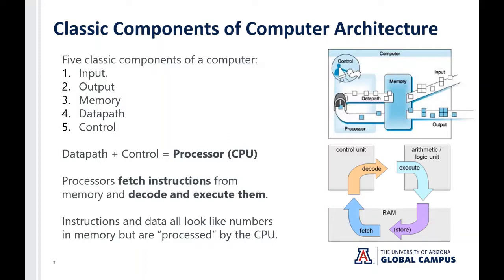If you take a look at the diagram on the right, you'll see the whole square at the top comprises the computer, with control represented by a little person with a megaphone and a script directing the operations, memory in the center, and input and output on conveyor belts going off to the right. There's also a cycle for the data path flowing through the processor — a primitive but effective illustration of computer organization and architecture.